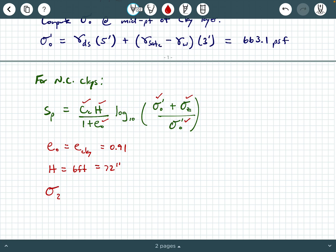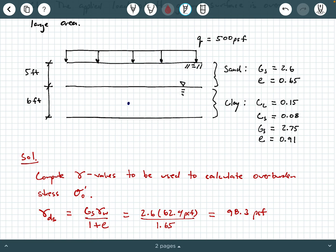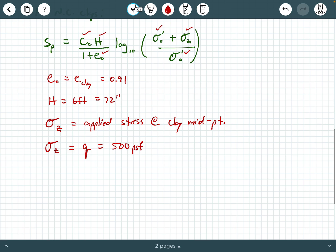We just calculated sigma prime naught. What about sigma Z? Well, sigma Z is the applied stress at clay midpoint, and we're going to say sigma Z is that Q value, which was 500 PSF at the ground surface. And why are we saying that? Well, we said that that Q value is applied over a large surface, which means stress dissipation is not going to be computed. So this was to account for no stress dissipation.